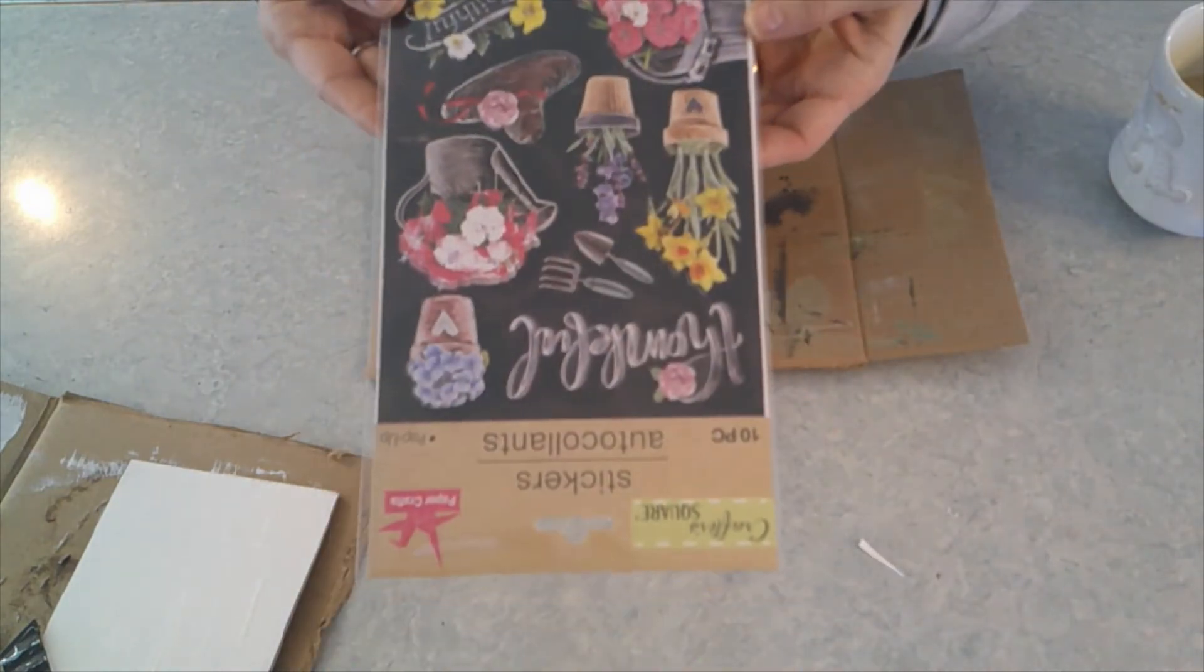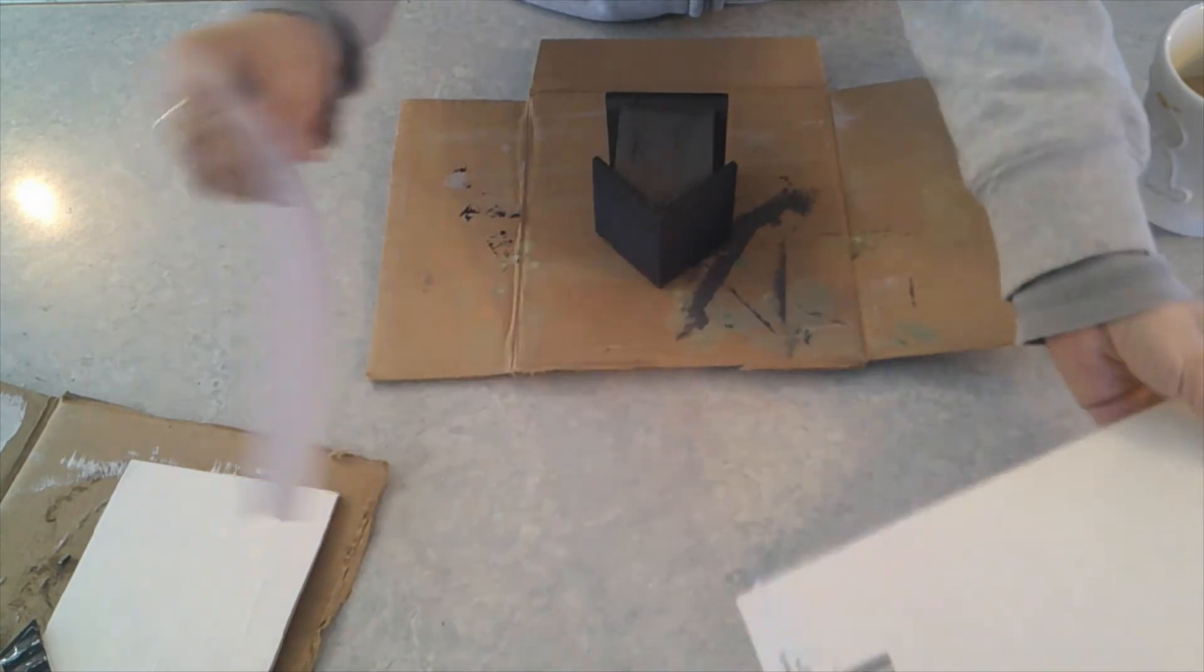After it was dry I used a 3D sticker that came from Dollar Tree out of my sticker collection and I stuck that on the back which would be the front of my birdhouse.